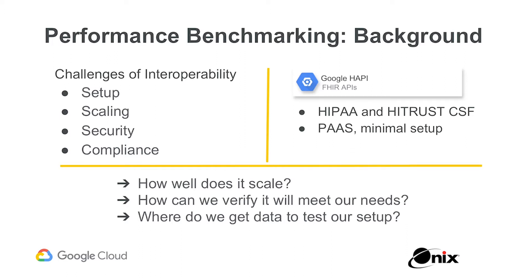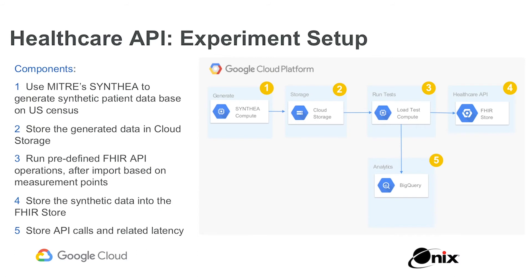The Google Healthcare API's FHIR API allows even smaller organizations and smaller practices to start exposing their data for research or sharing it with other healthcare providers. The question becomes: how does somebody doing application development implement this without risking misconfiguration? We had the same questions — how do we test it, how do we scale it, how does it meet our needs? — because we do app development for many healthcare providers. This started a collaborative exercise with the Healthcare API team to identify an experiment on how we could set it up.